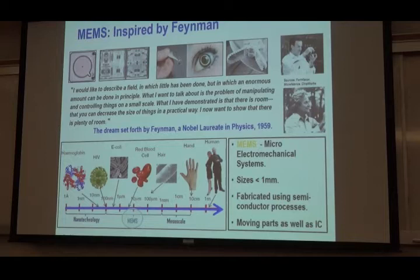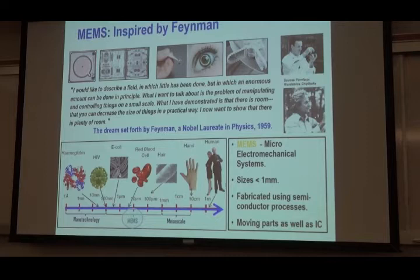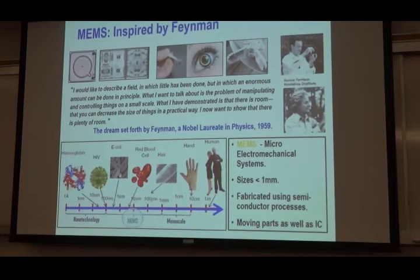People figured out: we're manipulating electrons for memory, writing things, switching. But could we actually have a moving part? That's when semiconductors moved into the so-called MEMS: micro-electro-mechanical systems. The mechanical part suggests we're moving things. For that you need a beam, a plate, a channel, a spring — mechanical components.